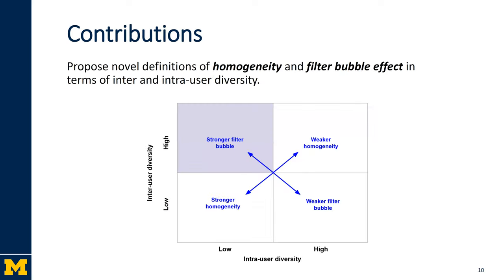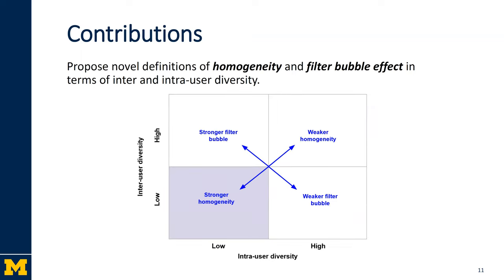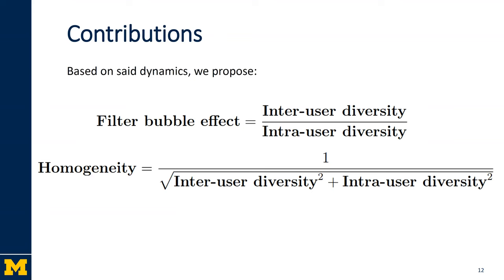Note that if we have high inter-user diversity and low intra-user diversity, then each user is essentially consuming items in isolation and we have a strong filter bubble effect. On the other hand, if we have low inter-user diversity and low intra-user diversity, then everyone is essentially consuming the same mainstream items and we have strong homogenization.